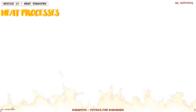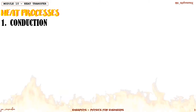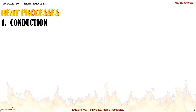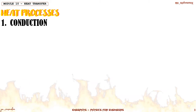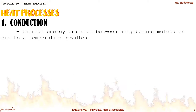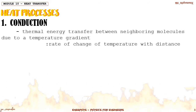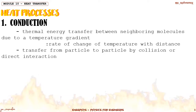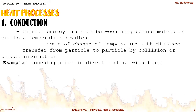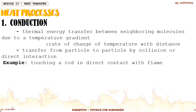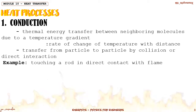In heat transfer, there are different processes wherein we transfer heat from one object to another, and these are called heat processes. There are three processes used to transfer heat. The first one is conduction. Conduction is the thermal energy transfer between neighboring molecules due to a temperature gradient — the rate of change of temperature with respect to distance. For conduction, this transfer of energy from particle to particle occurs when there is collision or direct interaction between particles.